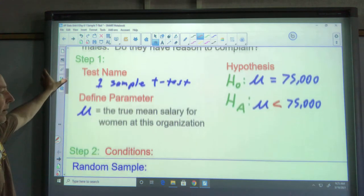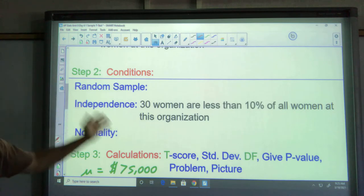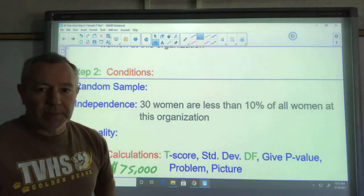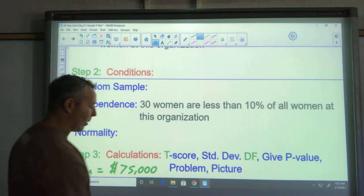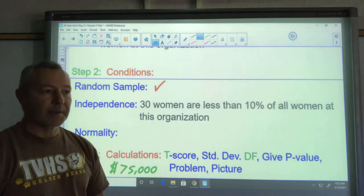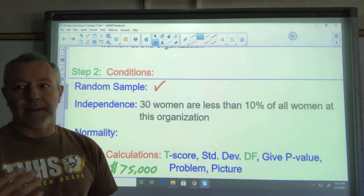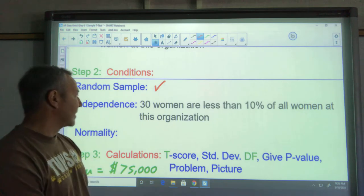Conditions are the same as they always are with our other tests. If you look back it says that we have a random sample, so all I have to do here is put a check. If it did not, I would say we assume that the sample of 30 women at this organization is a random sample. But in this case it's just a check.